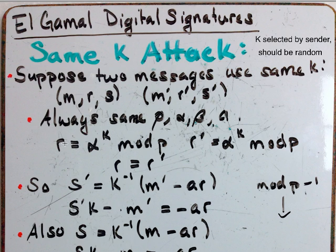So, we know that R equals alpha to the K mod P. We also know that R prime equals alpha to the K mod P because the alpha stays the same anyway and the sender didn't change the K. So, it's the same K for R and R prime and P stays the same. Therefore, we know that R equals R prime.